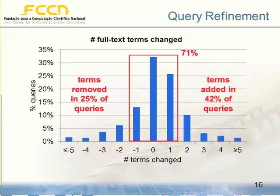This is another type of analysis looking at how users refined their queries — useful for making query suggestions. What we discovered was that 42% of query refinements added terms, while terms were removed in 25% of refinements. So users tend to go from broad to narrow search.